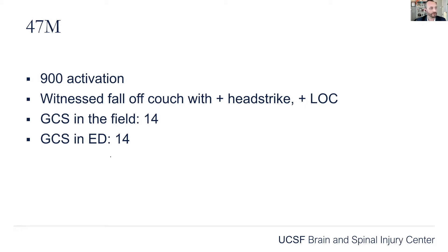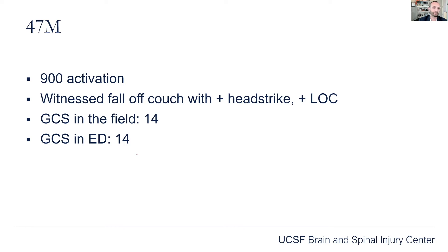What was the GCS in the field and what was it in the ED? That gives you a sequence of events and tells you the trajectory of the patient. If they're 14 in the field but an 8 in the ED, things are heading in the wrong direction. If they were an 8 in the field and 14 in the ED, they may have been severely concussed and are recovering. This information is very important when presenting these patients to your upper levels or attendings — being able to paint that picture will really help you out.